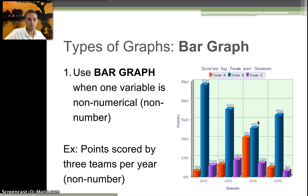Let's take a look at the different graphs. The first type is a bar graph. You'd want to use a bar graph when one of the variables is non-numerical. Our independent variable goes on the x-axis, the dependent variable on the y-axis, the vertical axis. What we're looking at here is scores by team per season, so the number of points they've scored by different teams per season.